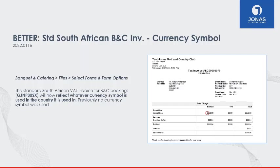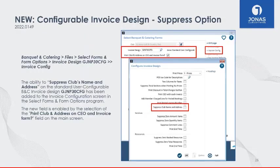For South African clubs, we've enhanced the Select Forms and Forms Options program for the standard South African VAT invoice for Banquet and Catering bookings to now reflect whatever currency symbol is used in the country. Previously no symbol was used. Additionally, in the configurable invoice design screen within Select Forms and Form Options, we've added the ability to suppress the club name and address on the standard user-configurable Banquet and Catering invoice design.